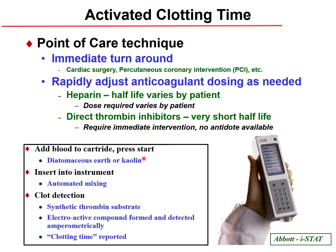In the ACT test, blood is added to a cartridge containing kaolin or diatomaceous earth. When the cartridge is inserted into the instrument, it automatically mixes. Clot formation is detected using a synthetic thrombin substrate; an electroactive compound forms and is detected amperometrically, with the potential measured and the clotting time reported.